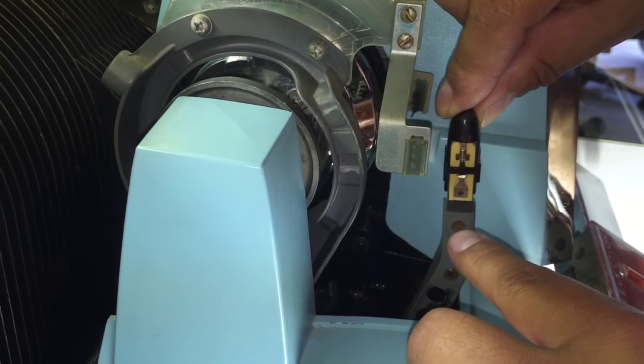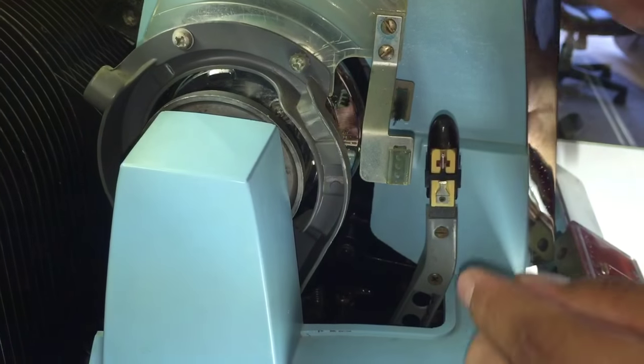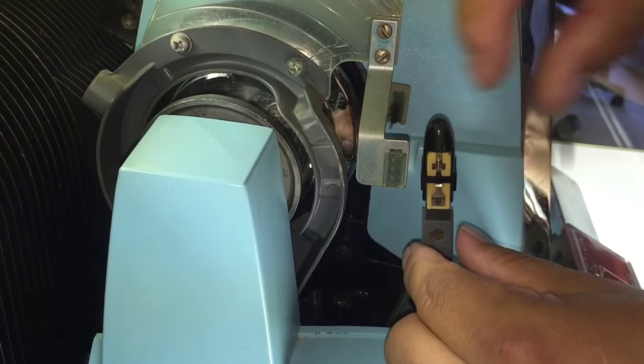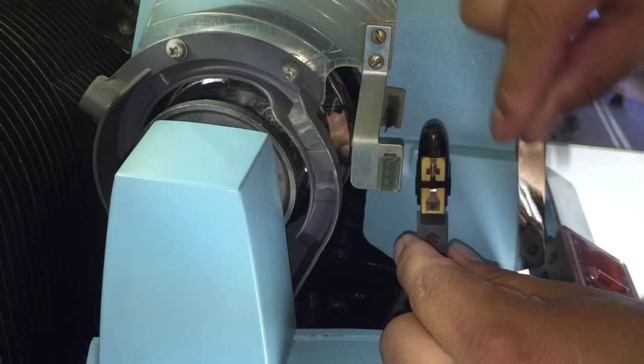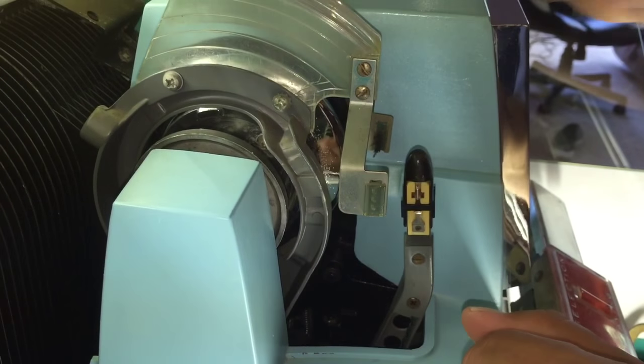The easier way to do it is to unscrew this and pull it from the base. Then you have it in your hand and can do it right on your table. Come back in - it's got two prongs. Plug it back in and screw it right in there. It's that simple.